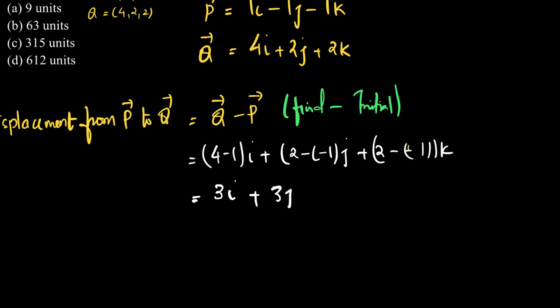So the displacement vector PQ is now 3i + 3j + 3k. But is the question to find the displacement vector? No, the question is to find the magnitude of displacement vector.